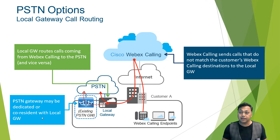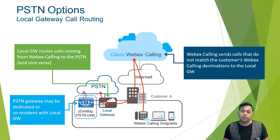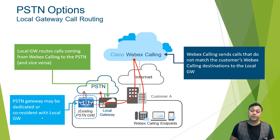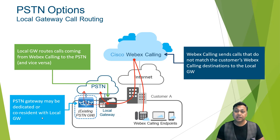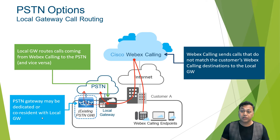You can configure each PSTN option per location. For example, devices in location A could use a Cisco calling plan for PSTN access, while devices in location B could be using a cloud connected partner.